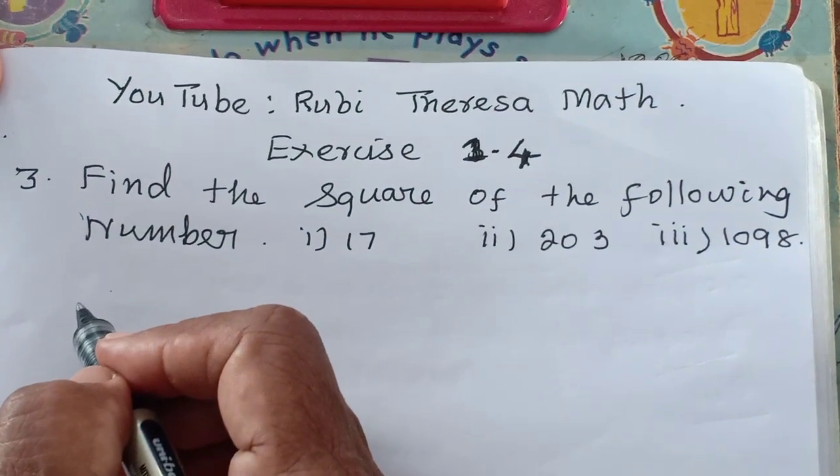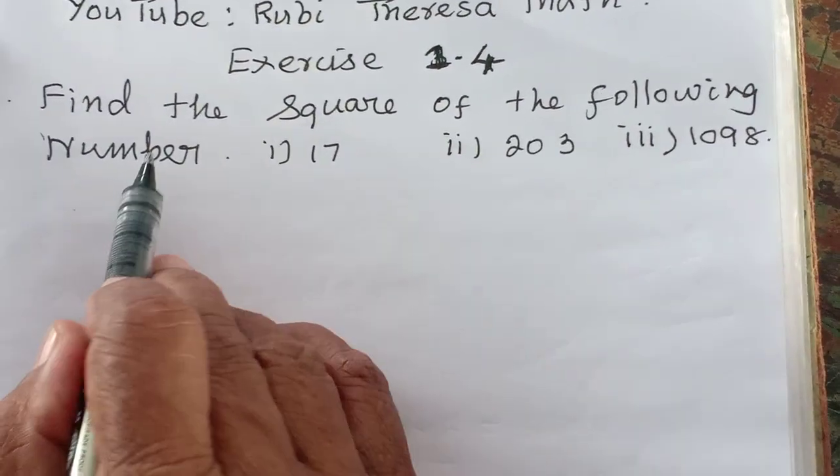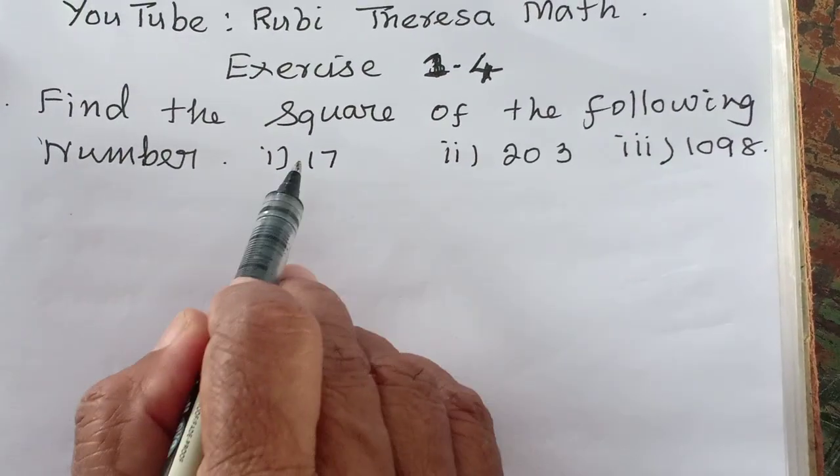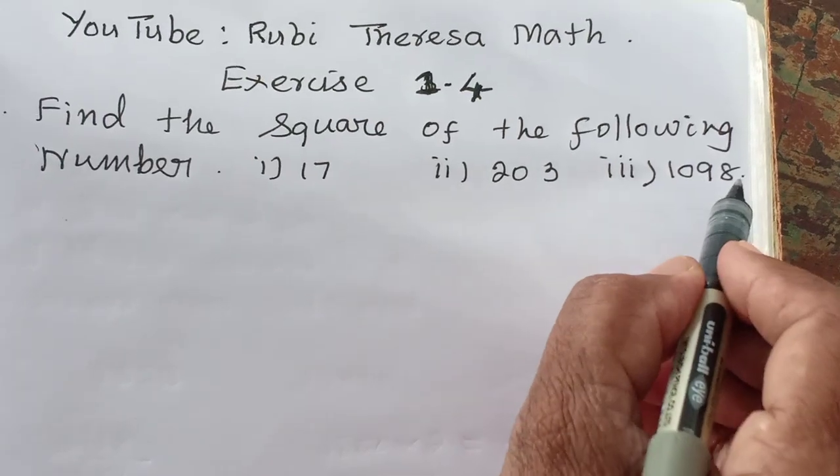Good morning my dear. This is Ruby Teresa. Find the square of the following number: 17, 203, 1098.